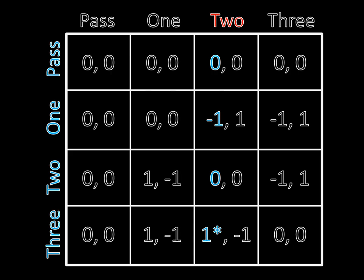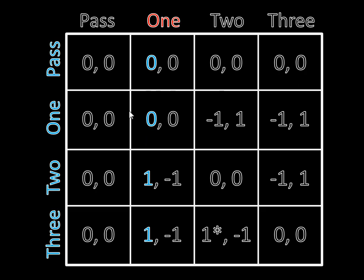When we're marking best responses in a game, we're going to repeat this pattern over and over again. We have four different strategies for player two, so let's go through all four. If player two is only sending one unit out, if player one passes or sends one unit out, he draws and gets zero. But if he sends two or three units out, he wins and gets a one. So these are the two best responses. There can be more than one best response — when player two sends out one unit, player one is indifferent between sending out two or three. It's a win either way, so both of those outcomes get asterisks.